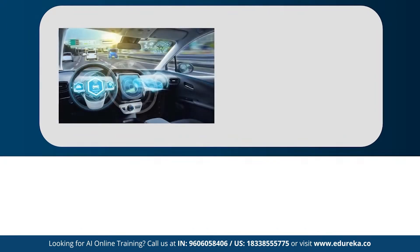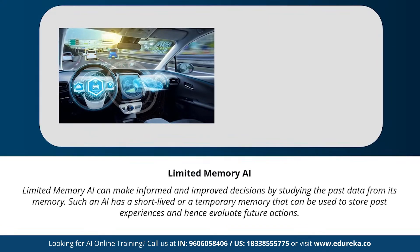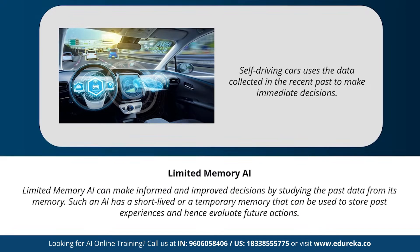Next we have limited memory AI. As the name suggests, limited memory AI can make informed decisions by studying past data from its memory, using a short-lived or temporary memory to store past experiences and evaluate future actions. Self-driving cars are an example — they use sensor data to identify civilians crossing the road, steep roads, and traffic signals to make better driving decisions.